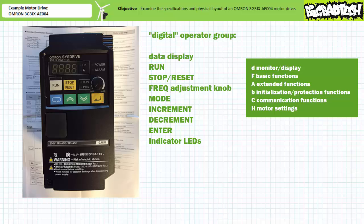In addition to the data display, the digital operator group includes several indicator LEDs. The power LED is lit when the motor drive is powered up. The alarm LED is lit when the motor drive experiences an error. The run LED is lit when the motor drive is actively accelerating, running, or decelerating a motor. The program LED is lit when parameters of the motor drive are being adjusted. The hertz and amp LEDs are lit to accompany numerical data displayed on the data display with the appropriate units.